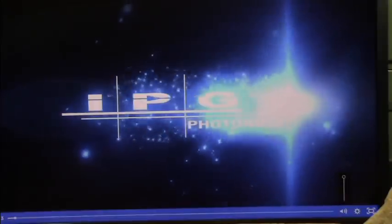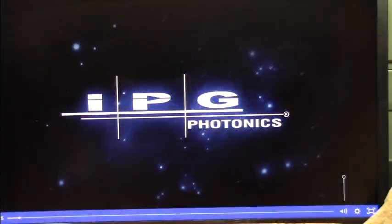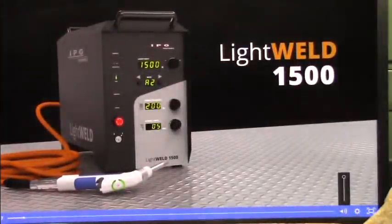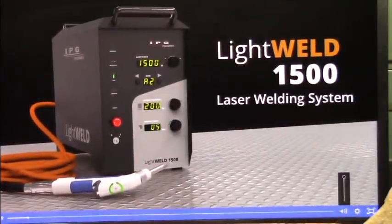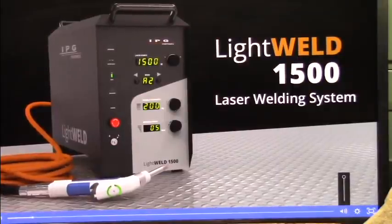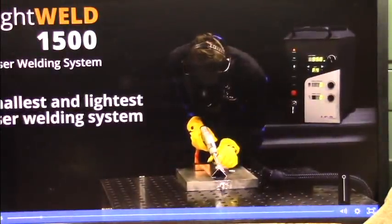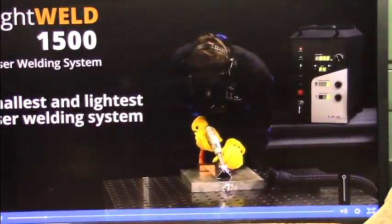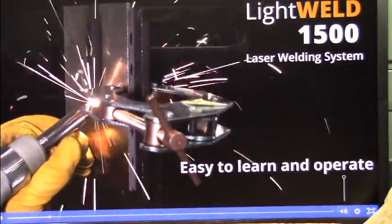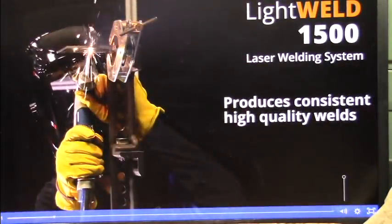Check this out. This is unbelievable. Light weld 1500, handheld portable laser welding system from the world leader in fiber lasers. Light weld is the smallest and lightest laser welding system available, is easy to learn and operate, and produces consistent high-quality welds.